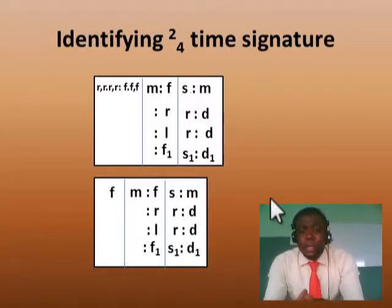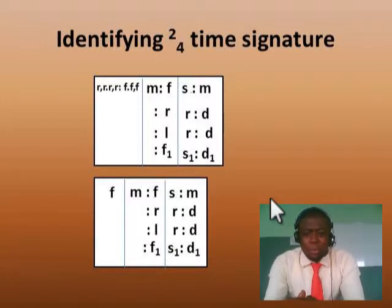Just count how many colons you have in that measure and add one to whatever value you got. Let's say you counted x—add one to the x. Whatever value you get is your numerator. From there you can deduce your denominator and you know the time signature.